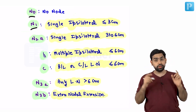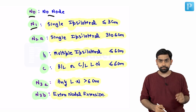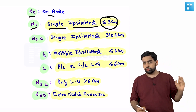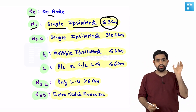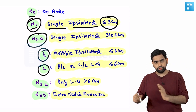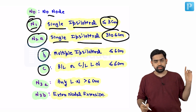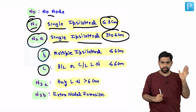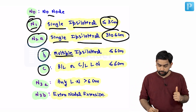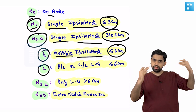Now for lymph node staging — this is very important and has been asked many times in exams. N0 is no lymph node involvement. N1 is a single ipsilateral lymph node less than three centimetres. N2 is divided into N2A, N2B, and N2C. N2A is a single ipsilateral lymph node between three to six centimetres. N2B is multiple ipsilateral lymph nodes, all less than six centimetres.